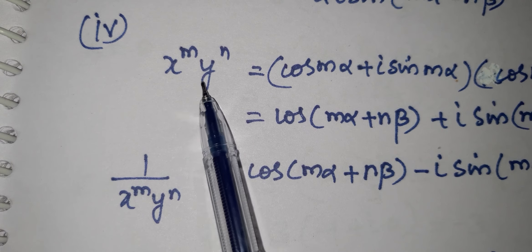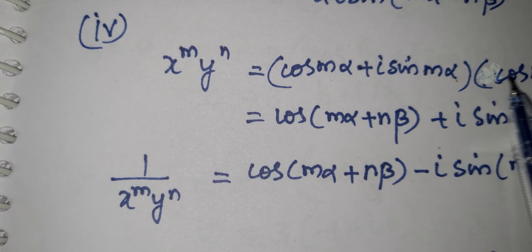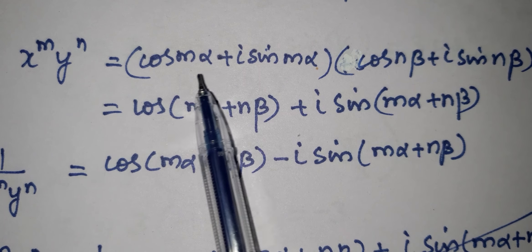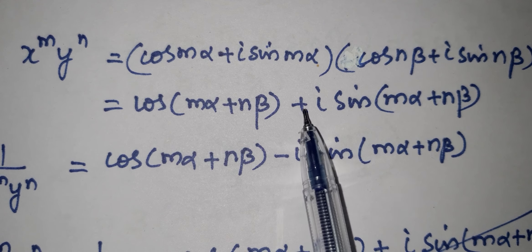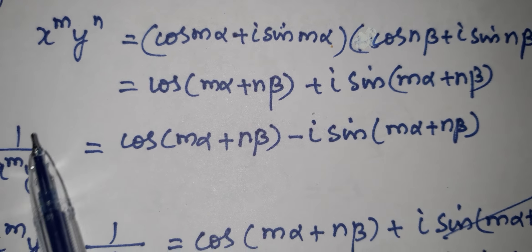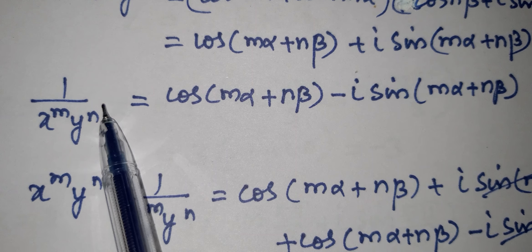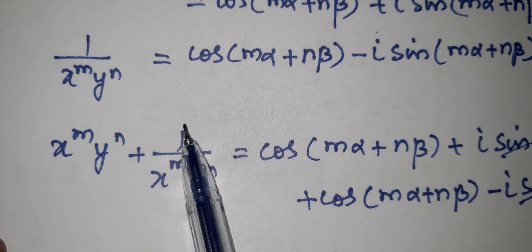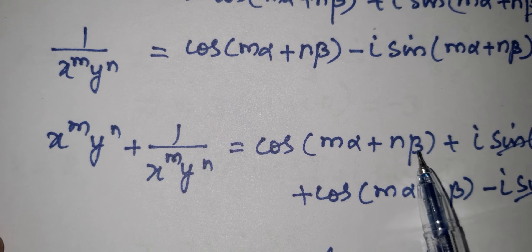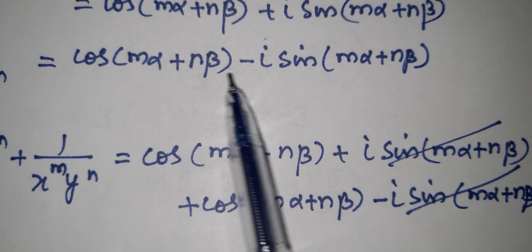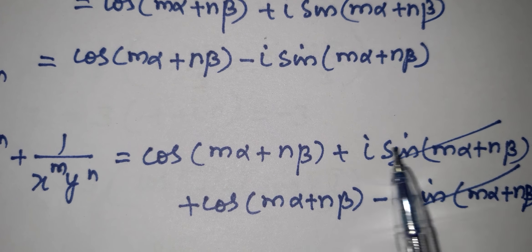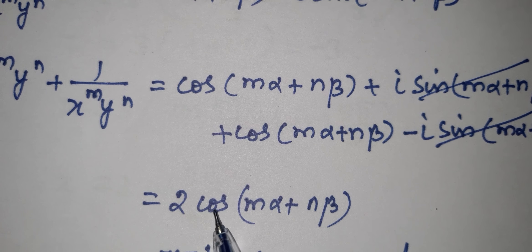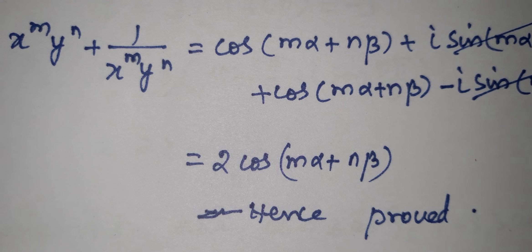The fourth sum: x power M into y power N equals cos(Mα) + i·sin(Mα) multiplied by cos(Nβ) + i·sin(Nβ), giving cos(Mα+Nβ) + i·sin(Mα+Nβ). Adding 1 by x power M into y power N, the i·sin terms cancel, and we get 2cos(Mα+Nβ). Thank you.